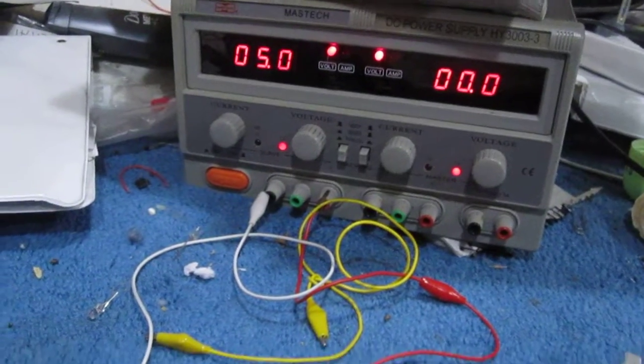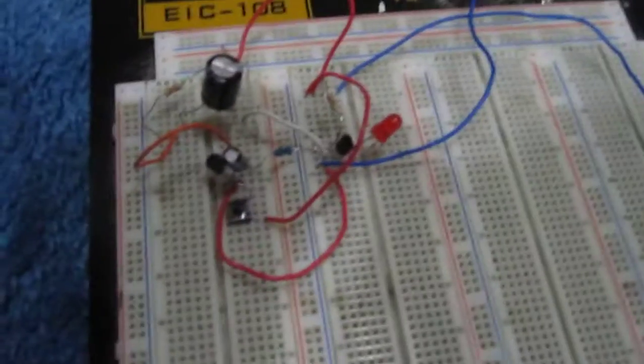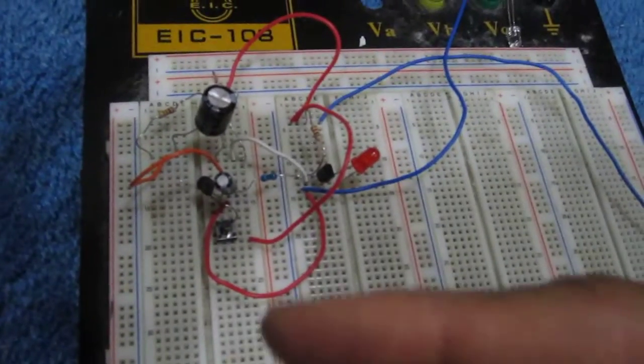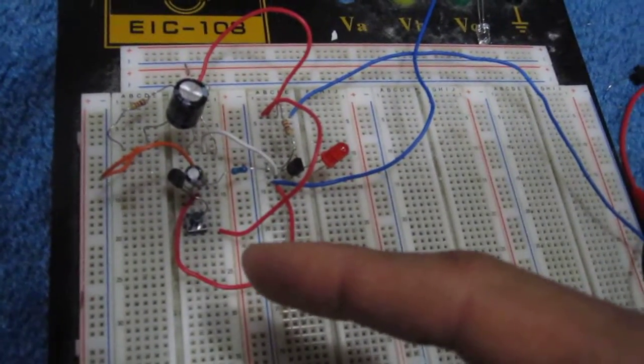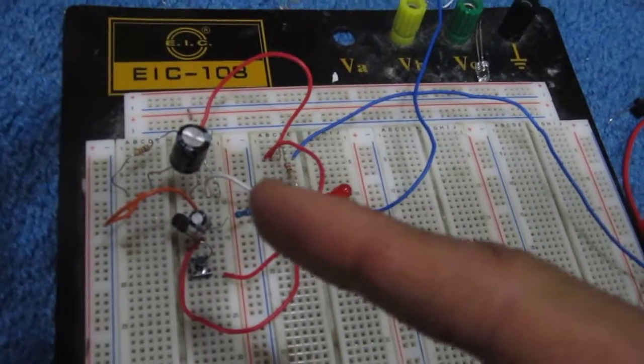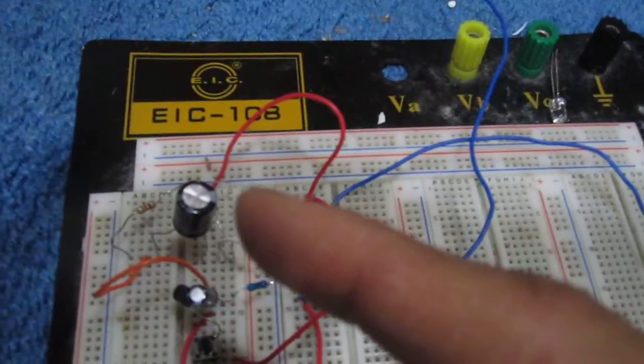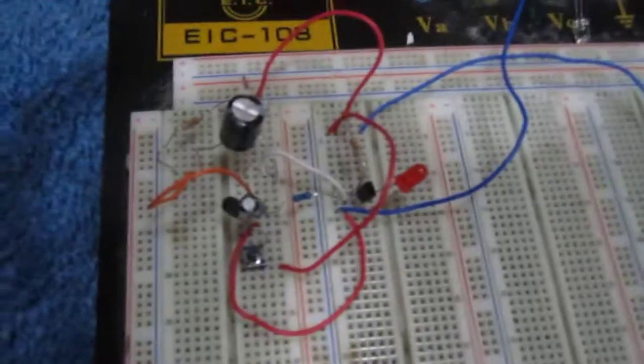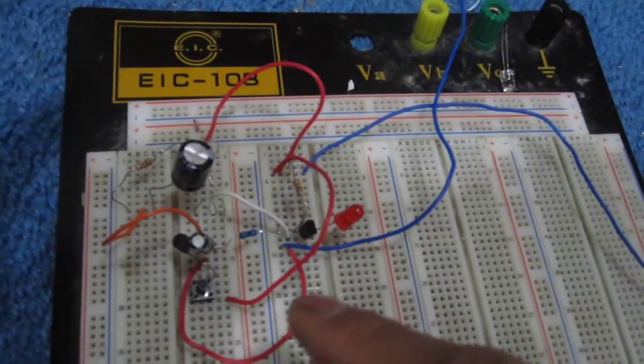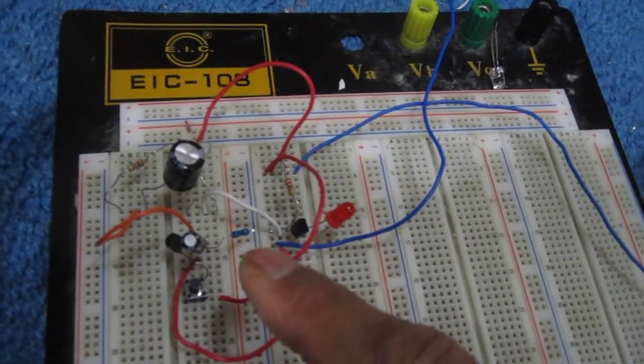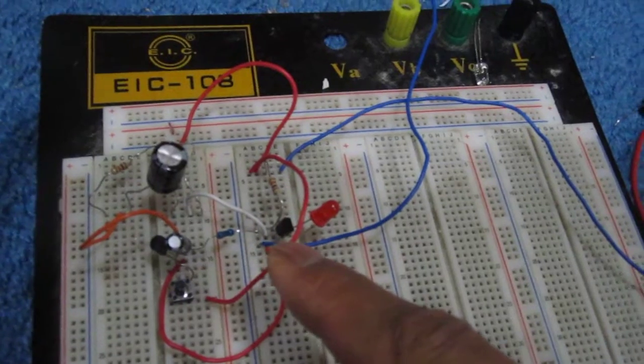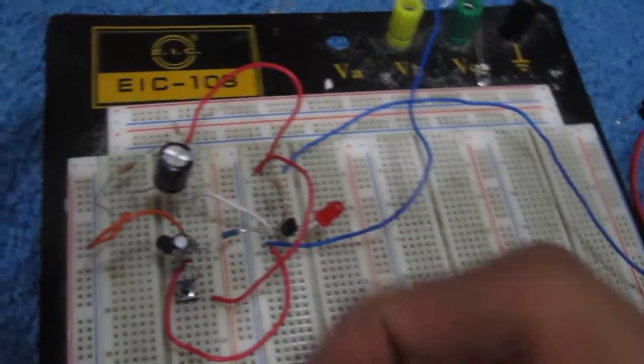Right now the circuit is hooked up to about five volts. Without me pushing on the push button, the capacitor is charging up through the resistor. When we press the push button, the capacitor dumps its charge into this transistor and that creates output.